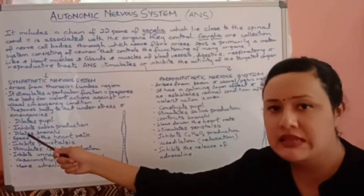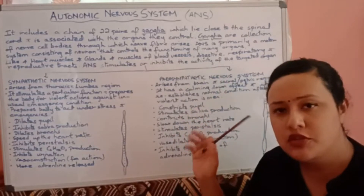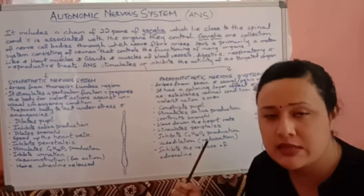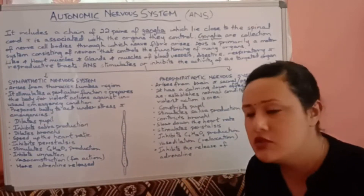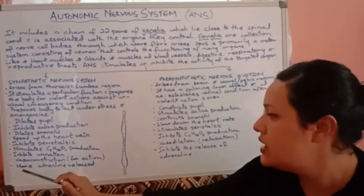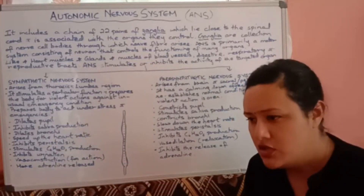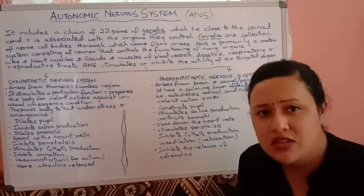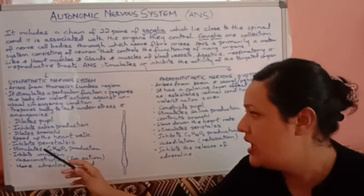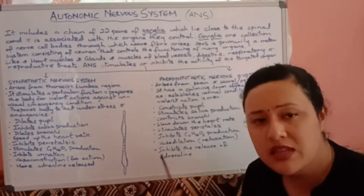For the heart: when you are fighting or restless, the sympathetic system speeds up your heart rate; the parasympathetic system slows it back down. For the stomach and digestion: when scared, food is not properly digested — the sympathetic system inhibits peristalsis (movement and digestion of food), while the parasympathetic system stimulates peristalsis.